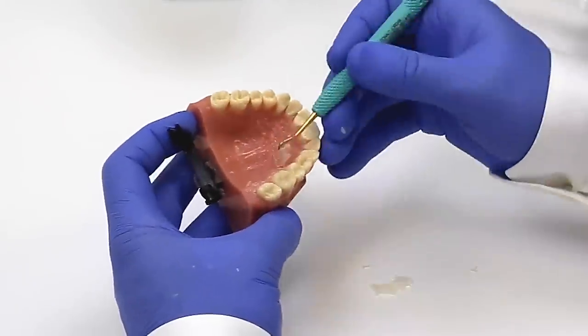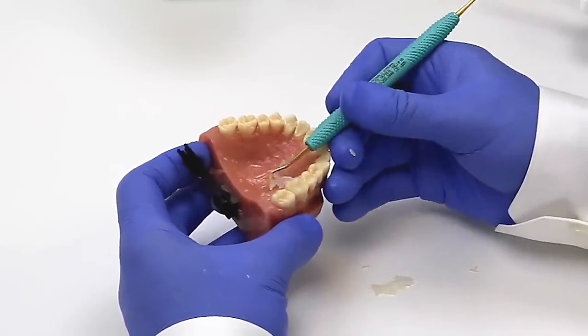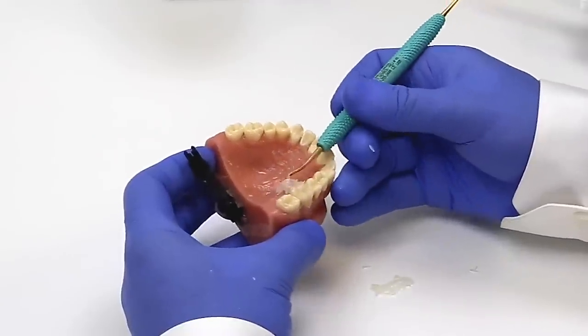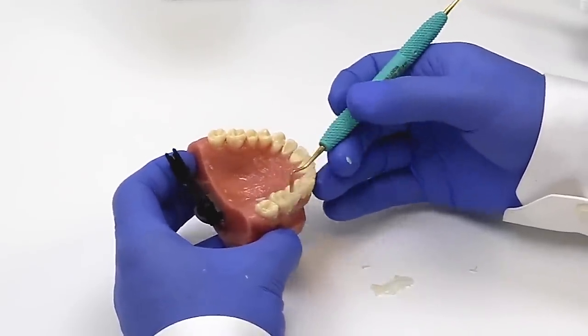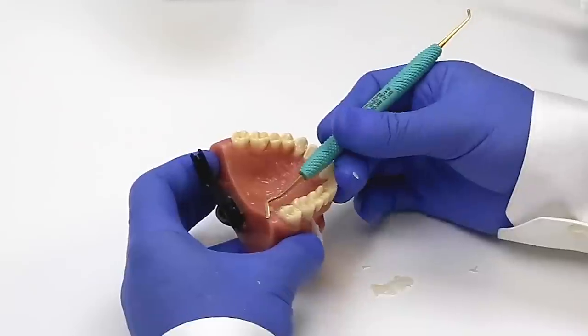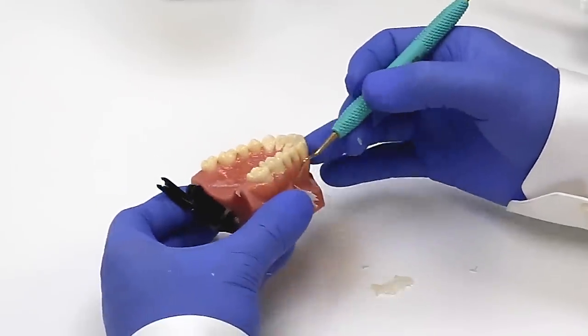We'll just get rid of that. We'll go on to the lingual. The same thing. Still an onion skin amount of excess. Very, very little. Breaks off very easily. And this is all due to the accuracy of Template.